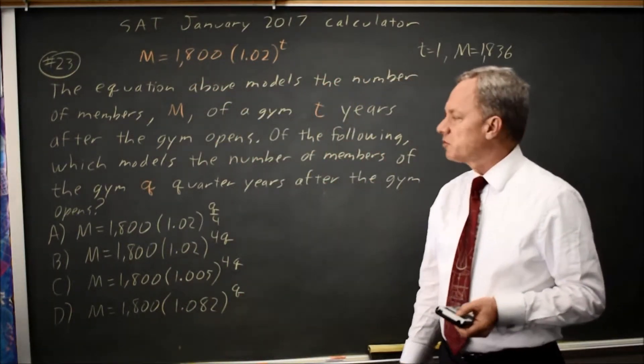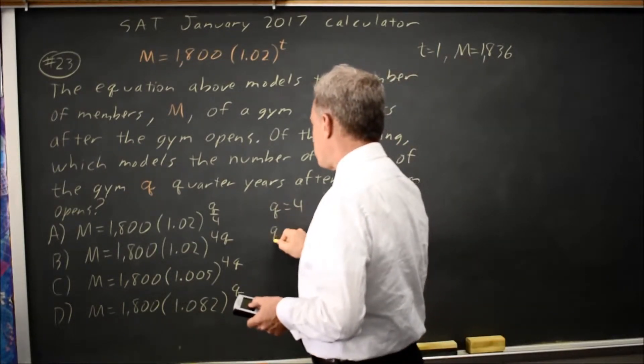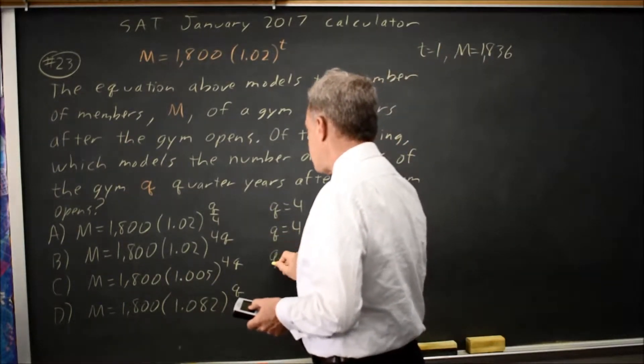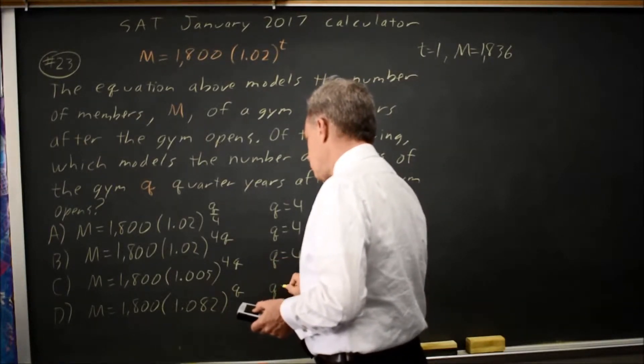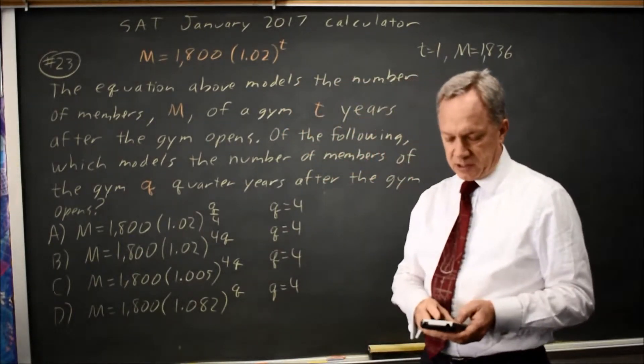t equals 1 is one year, which is four quarters, so at q equals 4, I'm going to get answers for each of these and check which answer matches.